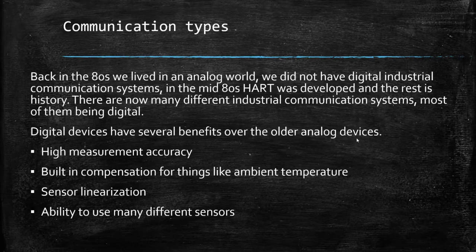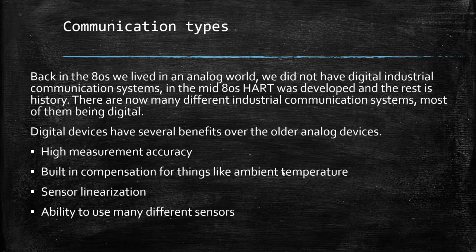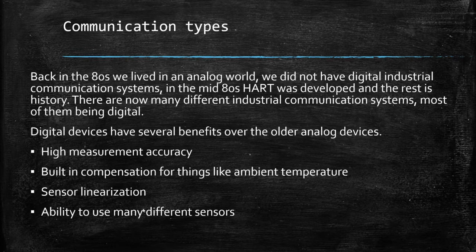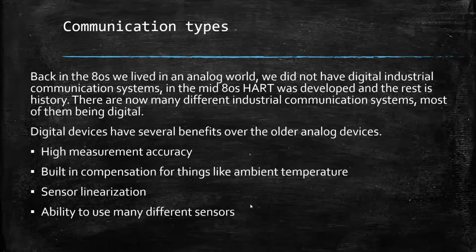Digital devices have several benefits over the older analog devices. They have higher measurement accuracy, usually in the order of 10 times more accurate. They have built-in compensation for things like ambient temperature and other variables. They have the ability to do linearization — or characterization — on their sensors and outputs. They can use many different sensors; like a Rosemount transmitter, the transmitting portion could use temperature sensors, pressure sensors, and different types. Some analyzers can do pH, conductivity, ORP — all from the same transmitter, just different sensors.